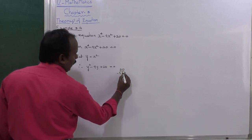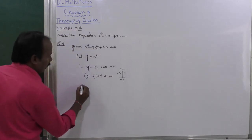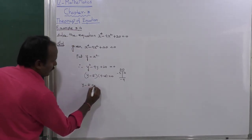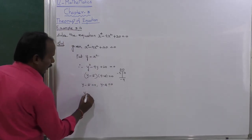So (y - 5)(y - 4) = 0. Therefore, y - 5 = 0 or y - 4 = 0, giving us y = 5 and y = 4.